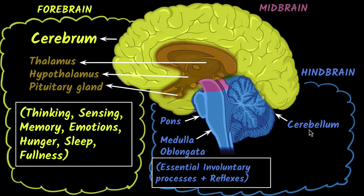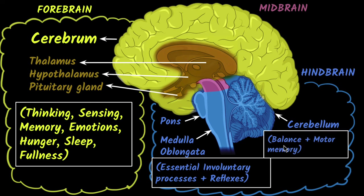Now let's come to the cerebellum. One of its core functions is balance — the sense of balance that you get. For example, your ability to walk or ride a bike requires balance, and that comes from your cerebellum. When somebody drinks alcohol, the cerebellum gets affected and that's why they're unable to balance.